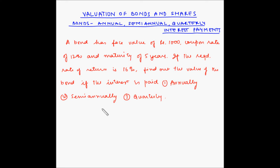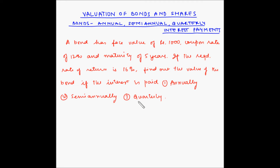Welcome to another video on valuation of bonds and shares. In this video we will look at an example involving annual, semi-annual, and quarterly interest payments for bonds. A bond has a face value of rupees 1000, coupon rate of 12%, and maturity of five years. If the required rate of return is 16%, find out the value of the bond if the interest is paid annually, semi-annually, and quarterly.